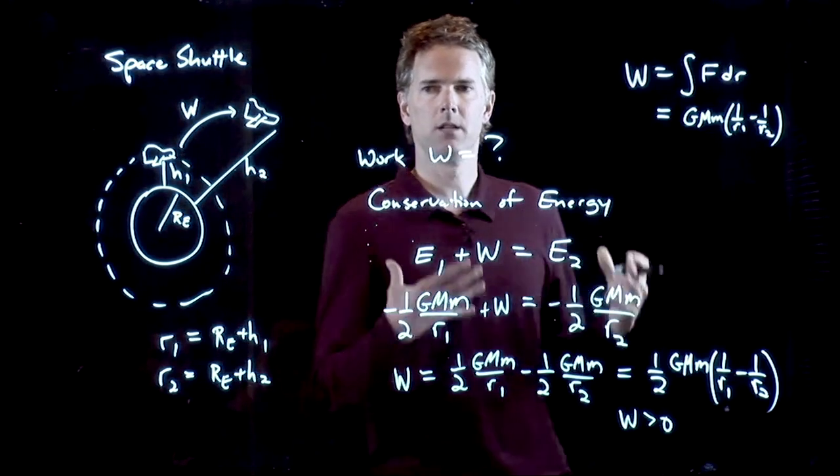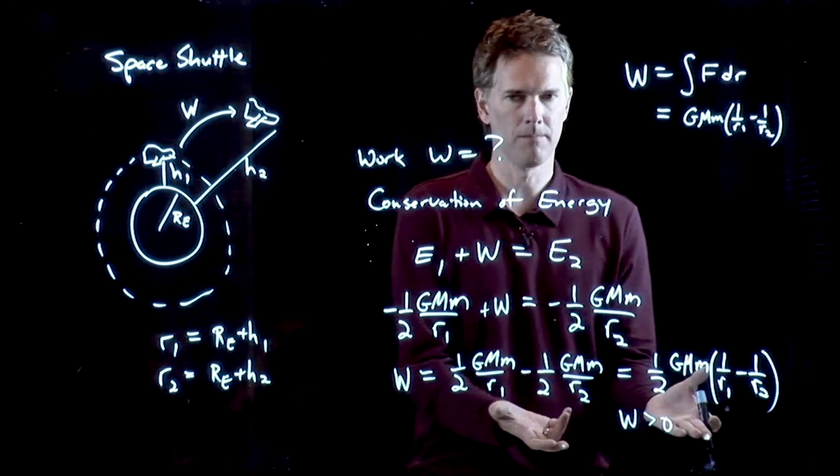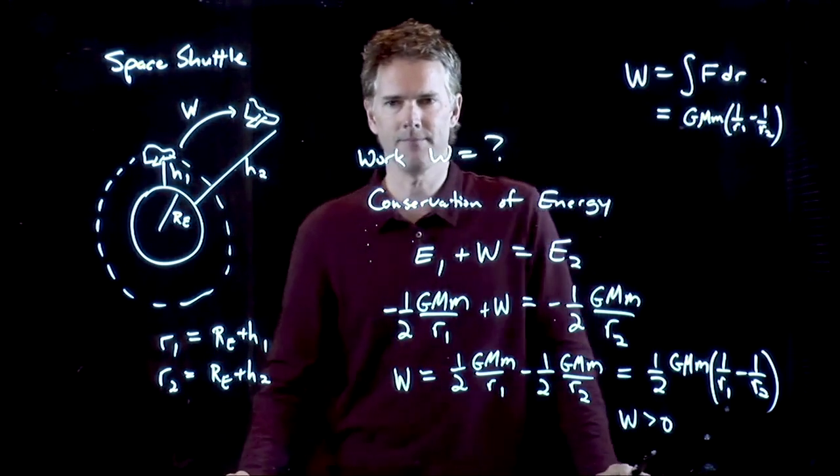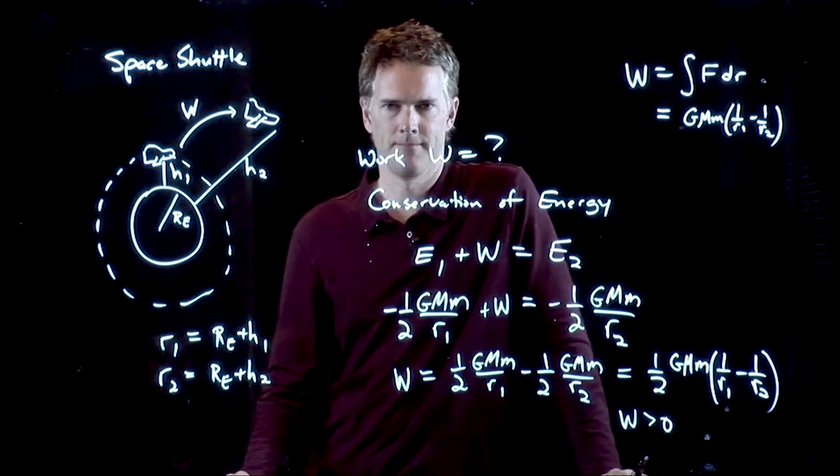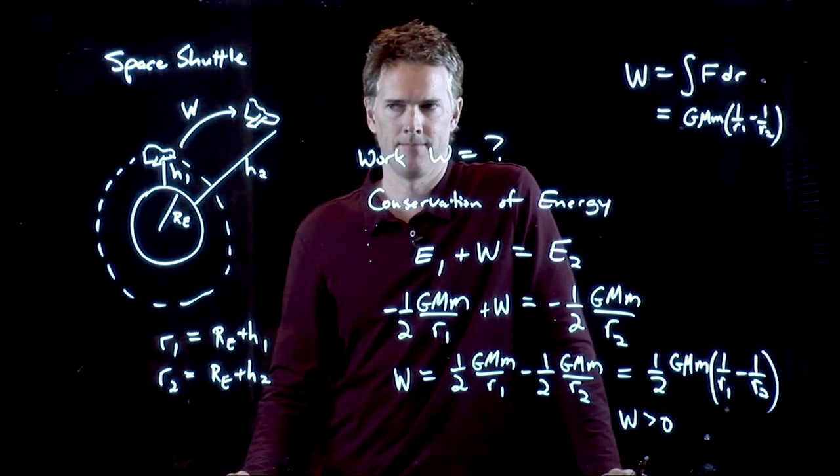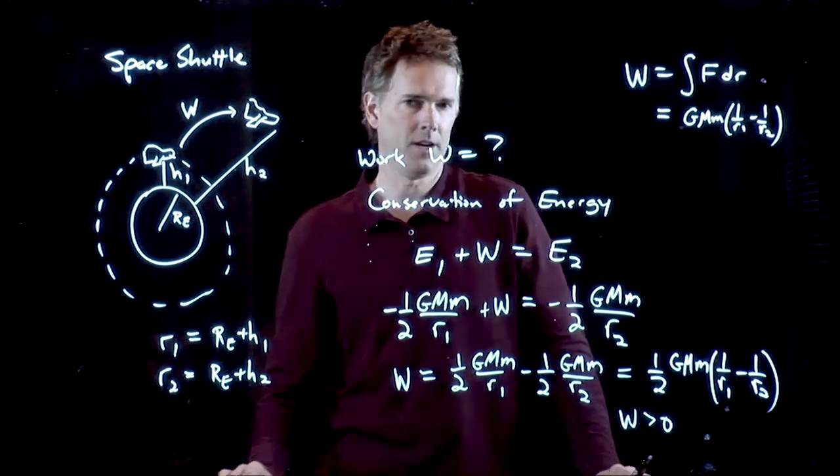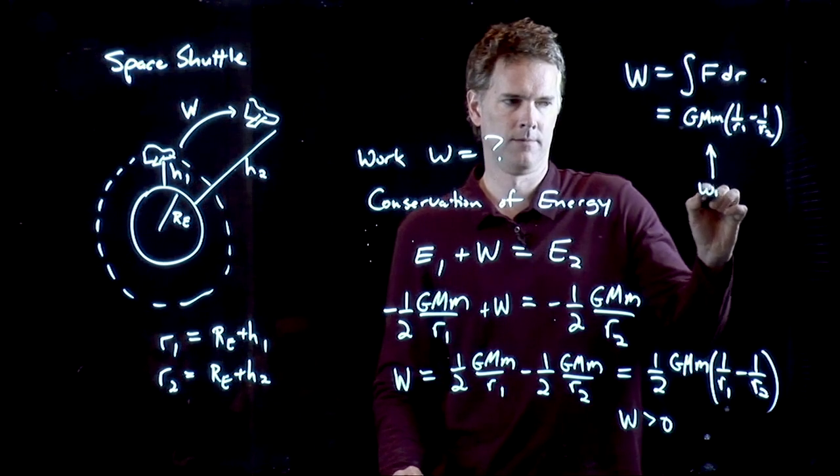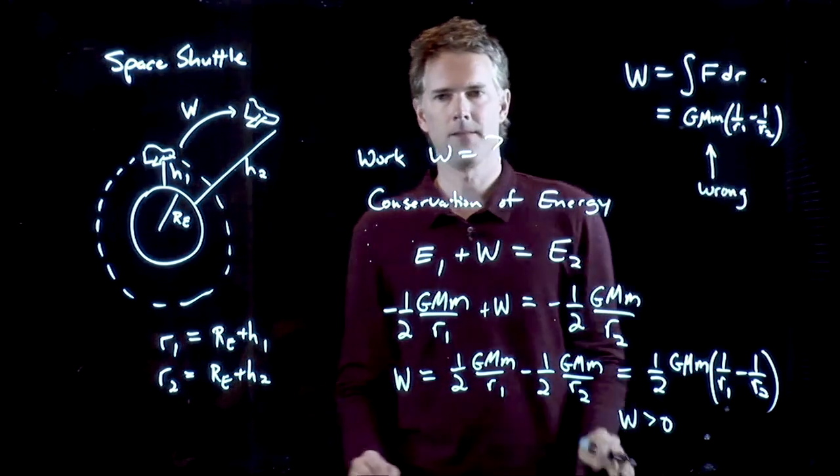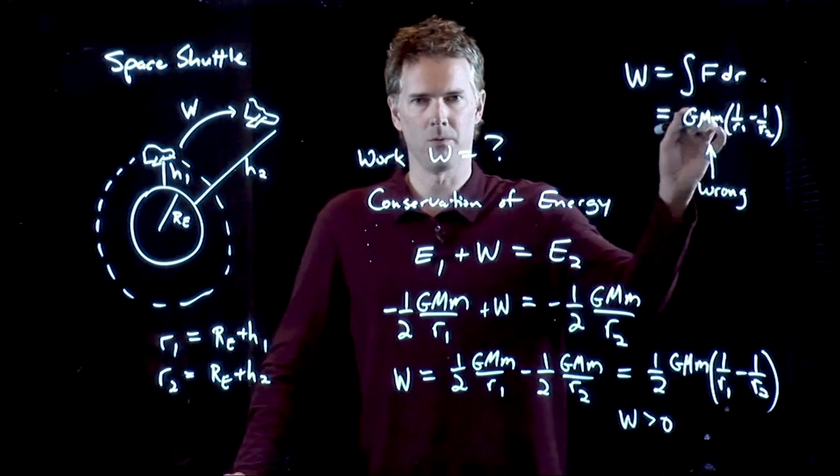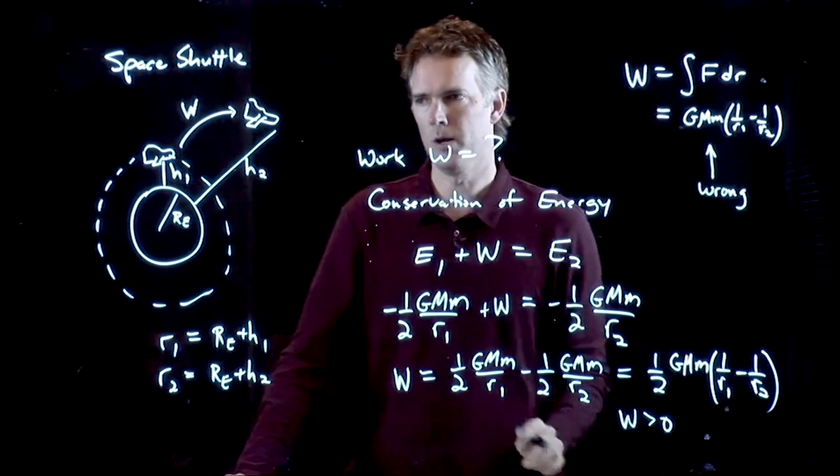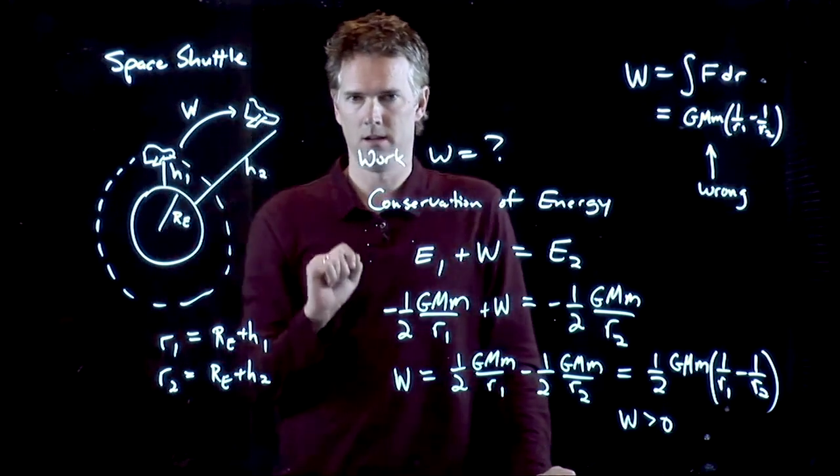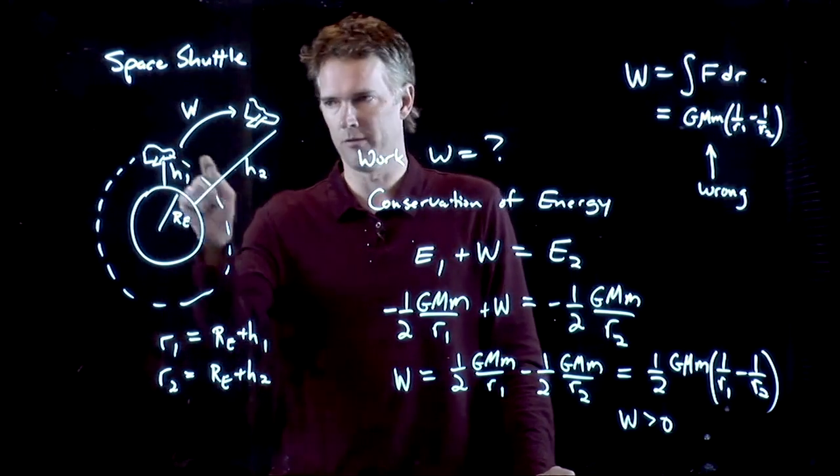So, what did we do wrong? Did we do something wrong here? Or did we do something wrong there? The answer is, we did something wrong here. Why is this one wrong? Because we were assuming that there's no change in the speed of the Space Shuttle going from here to here.